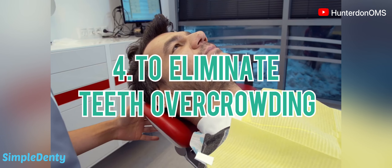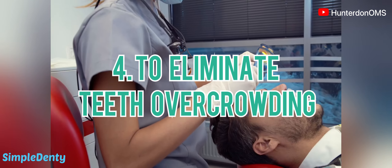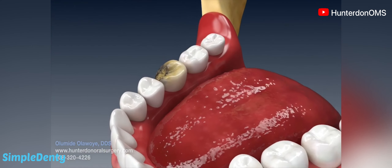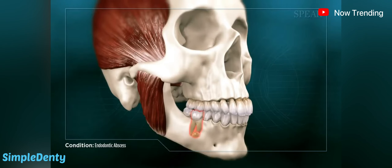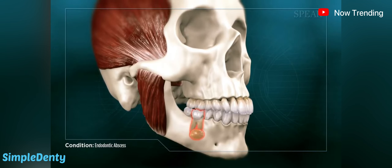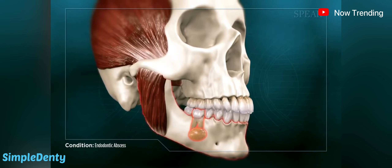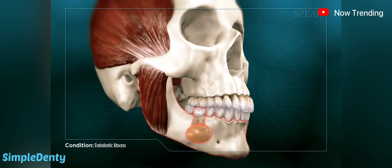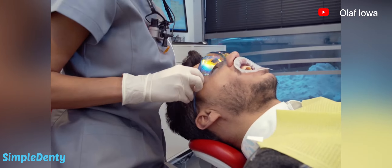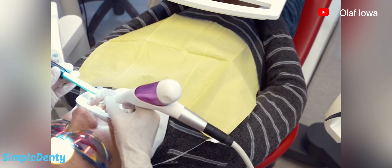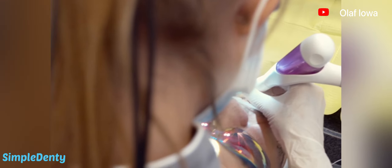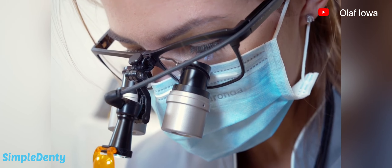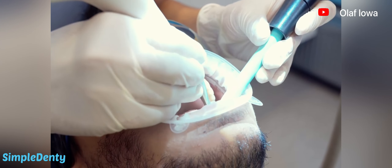Reason 4: To eliminate teeth overcrowding. The extraction of one or several teeth may be necessary to eliminate overcrowding in the mouth. This is also recommended when the patient has to undergo orthodontic treatment and there is no room for the teeth to move and realign. An orthodontist will check how crowded your teeth are and if there is enough room for them to move and achieve a better alignment. Extractions are recommended when there is not enough space to straighten the alignment of your teeth.